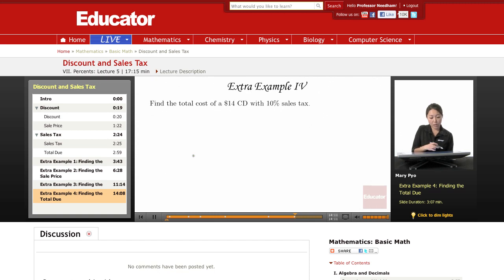The next example: we're going to buy a CD that costs $14. It's not on sale, even though that's better. It's on sale, it has 10% sales tax.